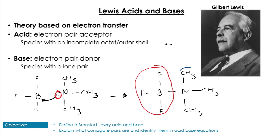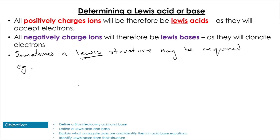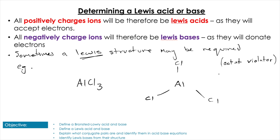To identify Lewis acids and bases, the simplest approach is to draw the Lewis structure. Positively charged ions attract electrons and are Lewis acids; negatively charged ions donate electrons and are Lewis bases. For AlCl₃, aluminium has a reduced octet, meaning it will readily accept electrons — making it a Lewis acid.